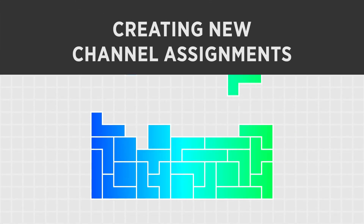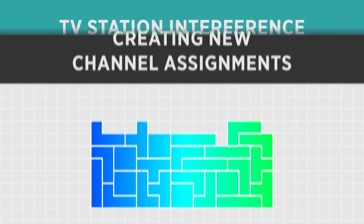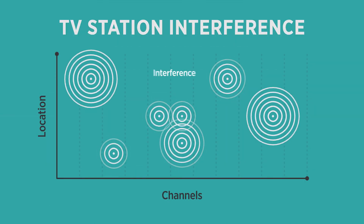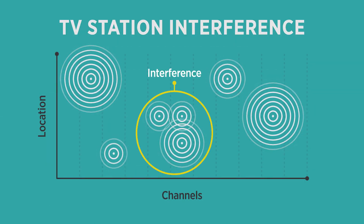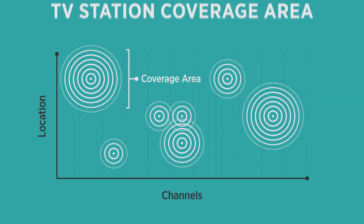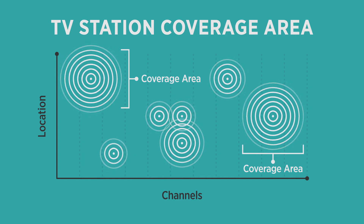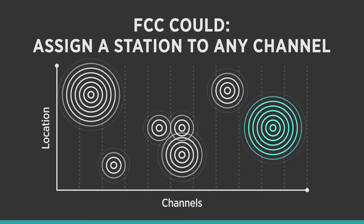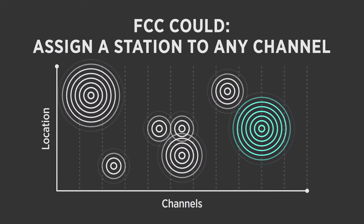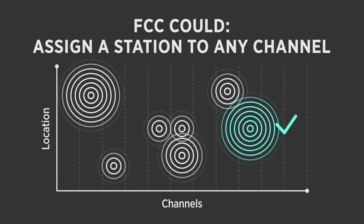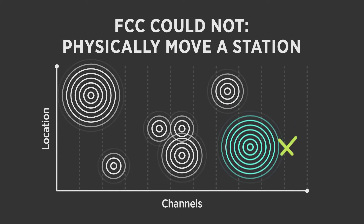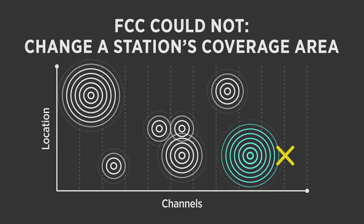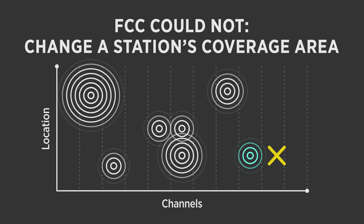Creating new channel assignments was not easy. Nearby TV stations interfere with each other if assigned the same or an adjacent channel. TV stations broadcast from specific towers and have their own individual coverage areas. Although the FCC could assign a TV station to any channel in the band, it could not move the station to a different physical location nor could it change its coverage area.